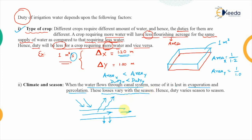These losses, known as transmission losses, vary with the season. Hence, the water which is available will also vary depending upon the season. If the water available is varying, that means the area which can be irrigated with that water will also vary from season to season. So that is the second factor which affects the duty of the crop.